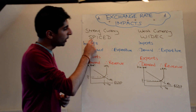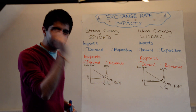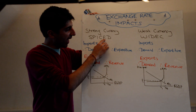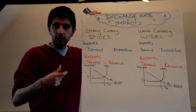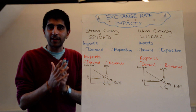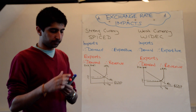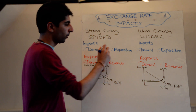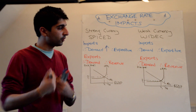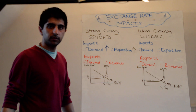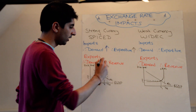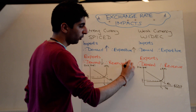So let's take a strong currency. We learn SPICED — that tells us exactly what's going to happen. With a strong pound or with a strong currency, imports become cheaper and exports become dearer — dearer just means more expensive. So we can isolate the effects: imports have become cheaper, so the demand for imports is going to increase, and the expenditure on imports is going to increase as well. At the same time, exports have become dearer, so demand for exports is going to fall, and the revenue brought in by exports is going to fall because we're not selling as many.